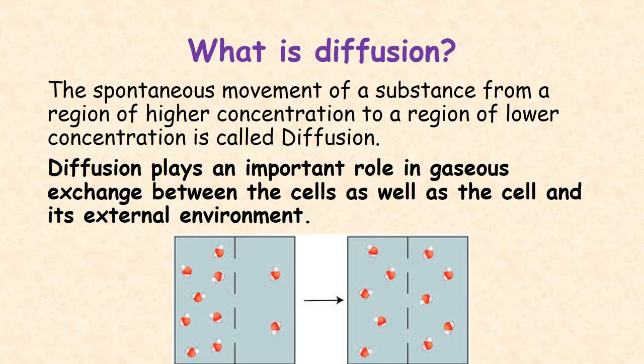What is diffusion? The spontaneous movement of a substance from a region of higher concentration to a region of lower concentration is called diffusion. Diffusion plays an important role in gaseous exchange between the cells as well as the cell and its external environment.